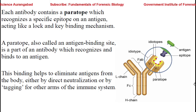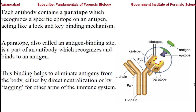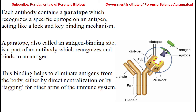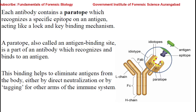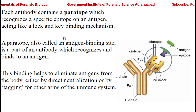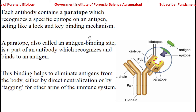Each antibody contains a paratope which recognizes a specific epitope on an antigen, acting like a lock-and-key binding mechanism. Here we can see the antigen has a specific element — the epitope. This is zoomed in: the antibody has a specific region called the paratope that fits with the epitope in a lock-and-key type of mechanism, meaning the antibody is specific against a particular antigen.